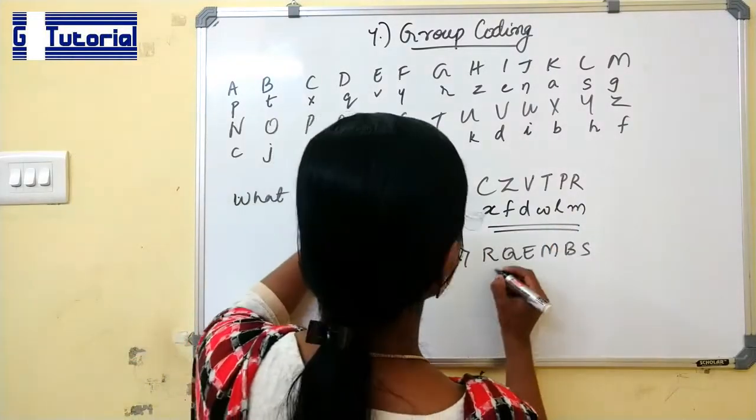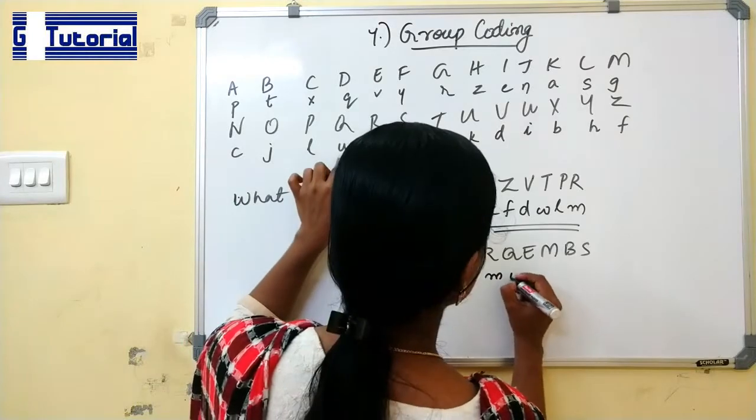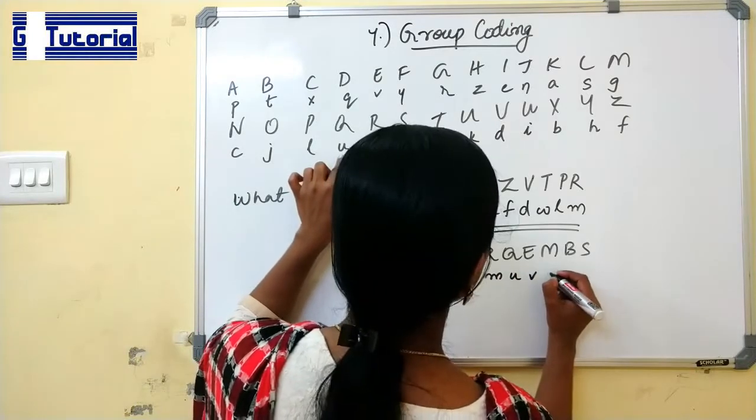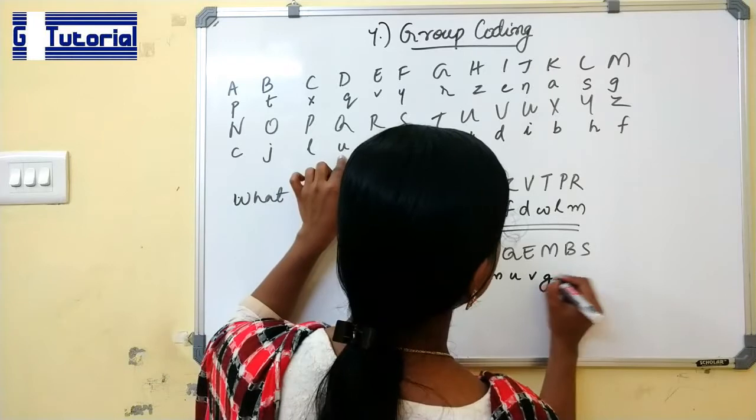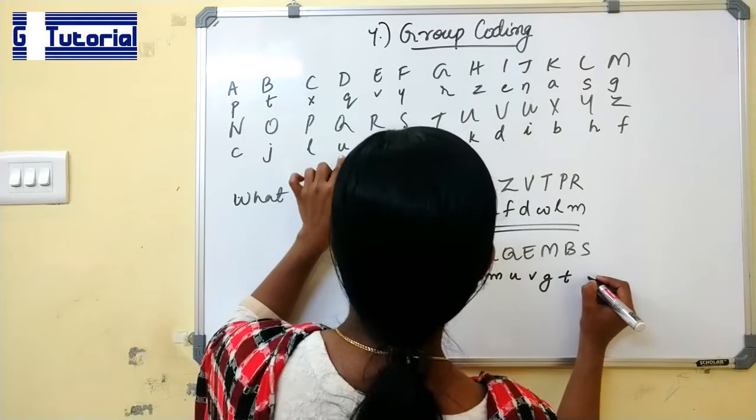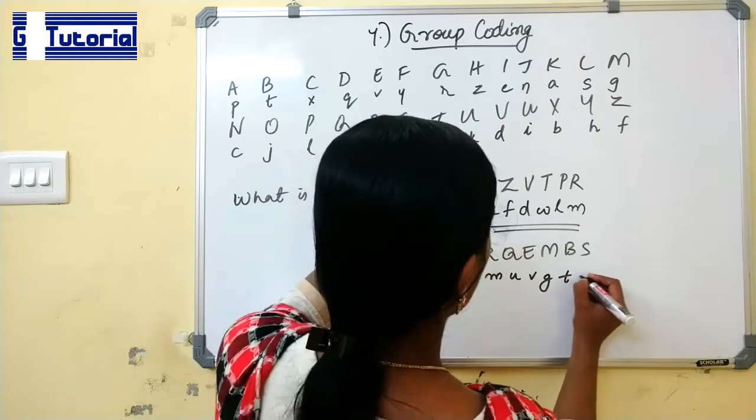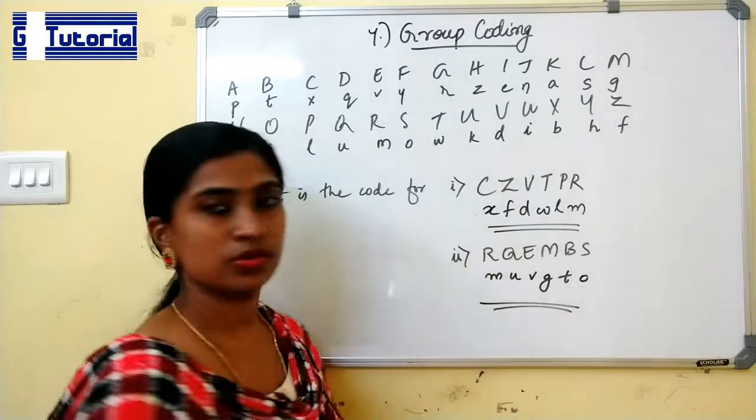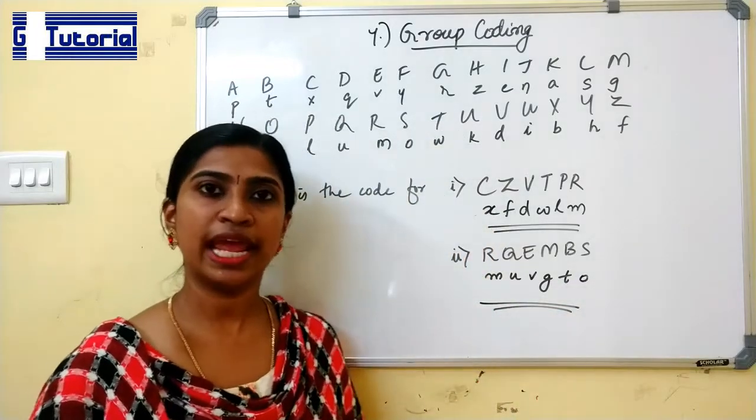Next question. RQEMBS. R is coded as M, Q is coded as U, E is coded as V, M is coded as G, B is T, S is coded as O. So this is the answer for this question. Now we can move on to the eighth type problem.